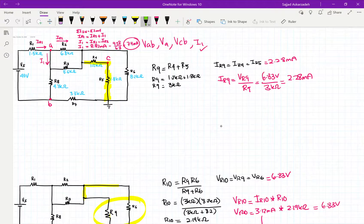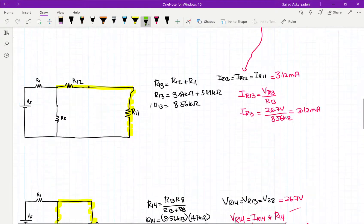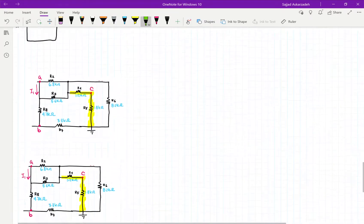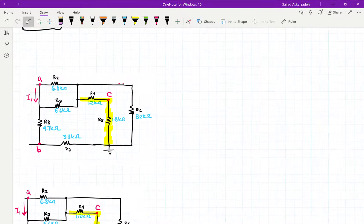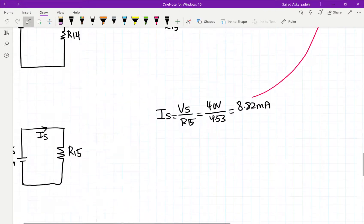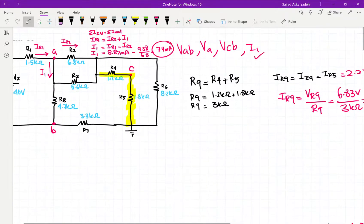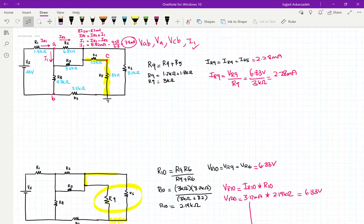We're going to find out what VAB, VA, and VCB are by taking apart the circuit that you need to calculate. I have drawn it on the bottom of this page here. Okay, so now what we're trying to do is calculate VAB, VA, and VCB.